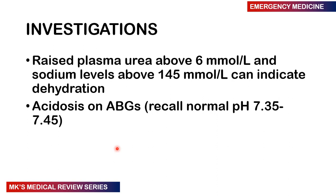Investigations to order include urea, electrolytes, creatinine, and arterial blood gases. A raised plasma urea above 6, sodium above 145, or a pH less than 7.35 (normal 7.35–7.45) can indicate dehydration or acidosis and help assess the fluid and electrolyte balance of the patient.